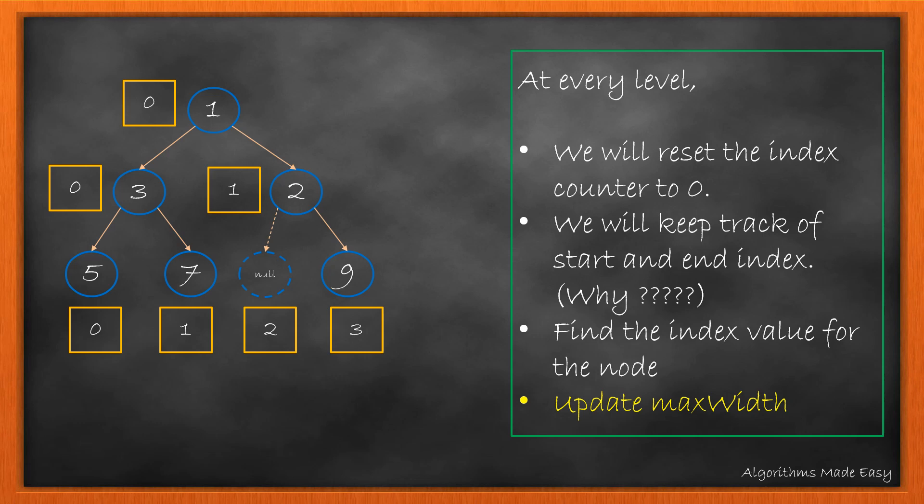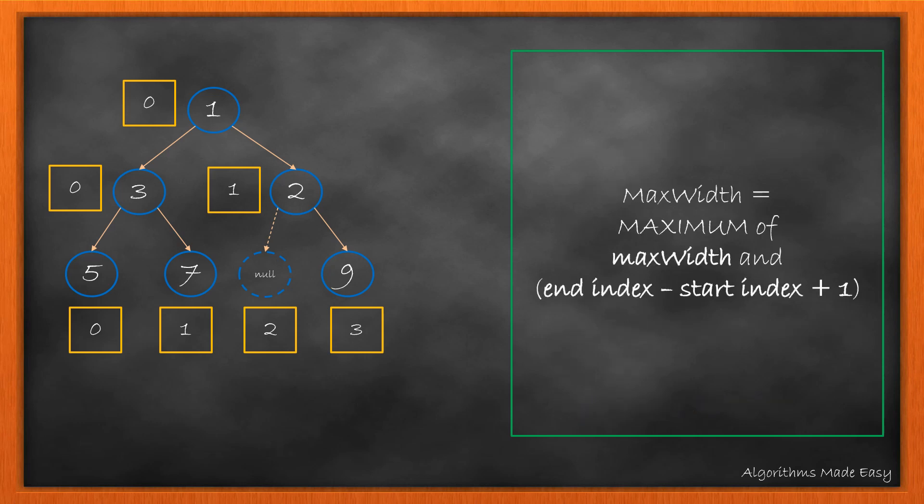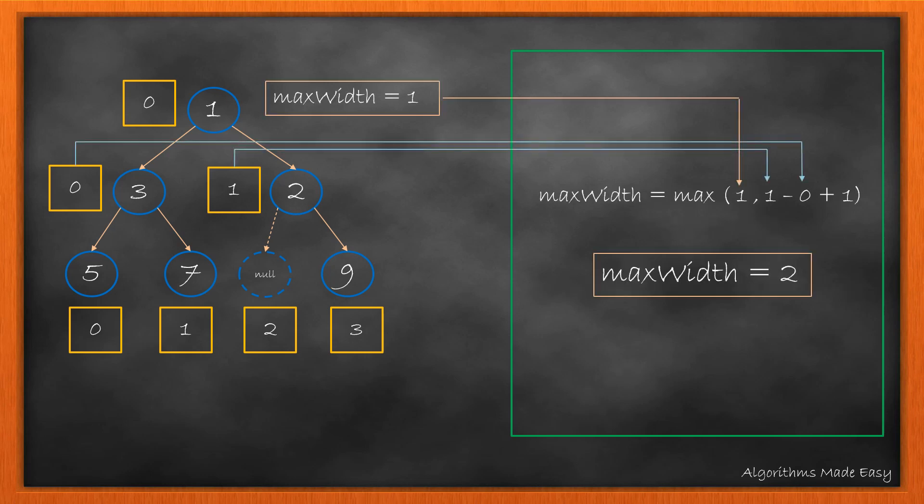Now comes the part of updating the max width. While exiting the level, we also update the max width. Max width will be the maximum of the value in max width and the current width, where current width will be end index minus start index plus 1. In this example, we can see the actual calculation of the max width. And it comes out to be 2 as it calculates for 2 nodes, 3 and 2. After traversing all the levels, the value in max width will be our answer.